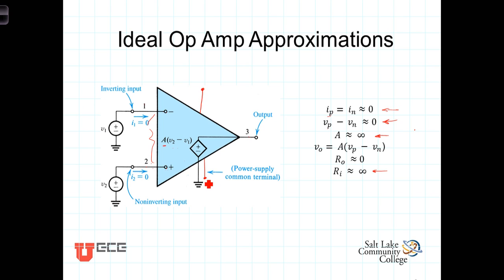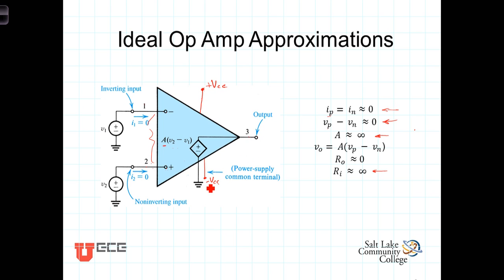There are two power supply terminals where you connect your power supply, sometimes referred to as VCC and negative VCC. Generally, you have a positive and a negative power supply connected to the operational amplifier. The output signal will have more power than the input signals, and the source of that power is these power supplies. The output voltage can't be any greater than the positive power supply voltage, and can't be any less than the negative power supply voltage. Those voltages are sometimes called rails, because they represent the boundaries within which the output must fall.